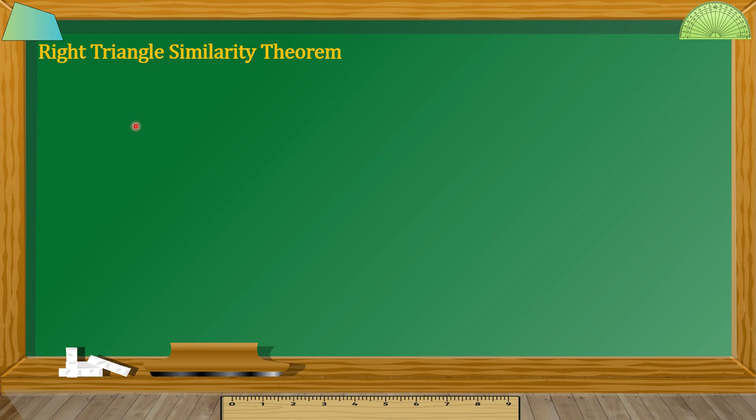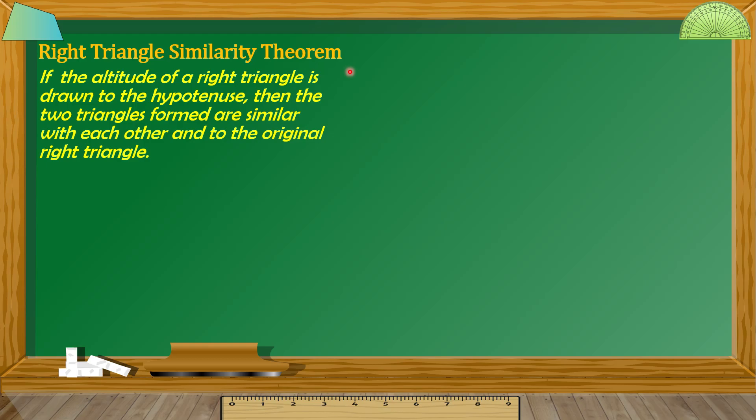So, define muna natin kung ano ba yung Right Triangle Similarity Theorem. Sabi dyan sa theorem na yan: If the altitude of a Right Triangle is drawn to the hypotenuse, then the two triangles formed are similar with each other and to the original Right Triangle.